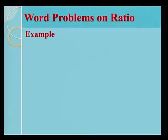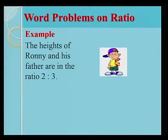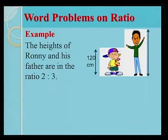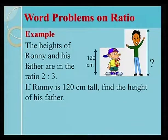We now look at an example on word problems on ratio. The heights of Ronnie and his father are in the ratio 2 is to 3. If Ronnie is 120 cm tall, find the height of his father.